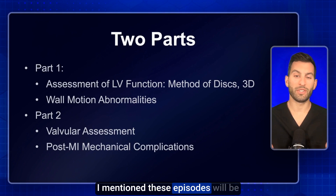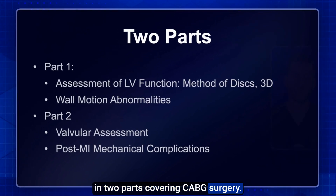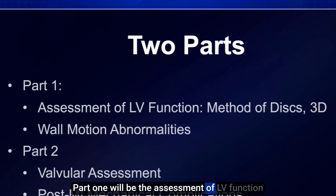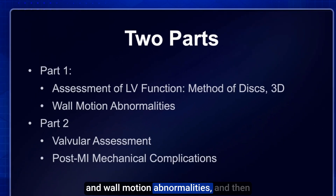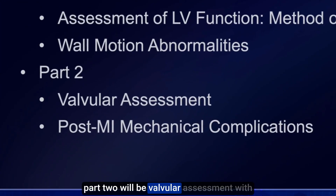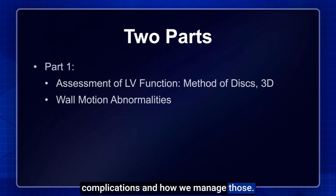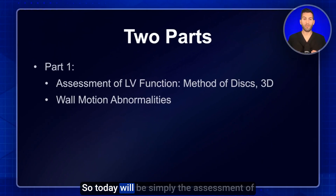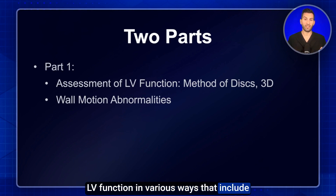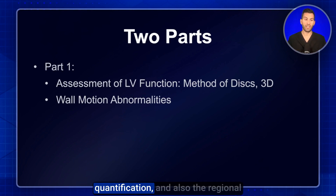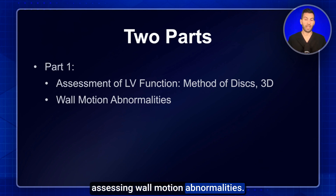These episodes will be in two parts covering cabbage surgery. Part one will be the assessment of LV function and wall motion abnormalities, and part two will be valvular assessment with cabbage surgery, post-MI mechanical complications, and how we manage those. Today we'll cover the assessment of LV function using the Simpson's biplane method of discs, 3D quantification, and regional assessment of the left ventricle including wall motion abnormalities.